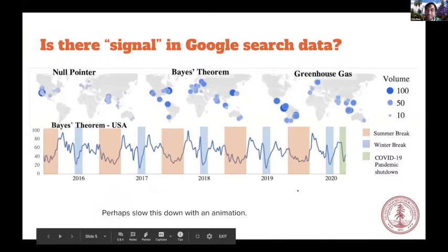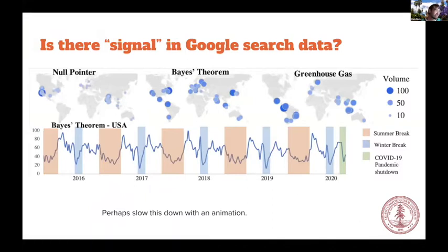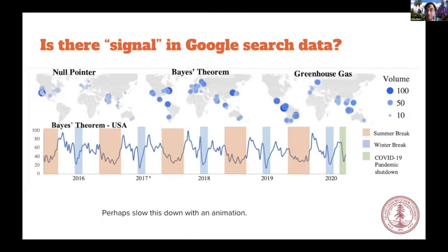Google has exposed to Serhat and I, and all of you, really interesting trends. If you go to Google and ask, can you tell me how much people are learning about Bayes' theorem, they can give you temporal trends and you can really start to see the education. You can see when people are not learning Bayes' theorem — it's during the summer break, the winter break, or the beginning of the COVID pandemic. It also tells you where people are searching for these concepts. Null pointers are searched a lot in the US and India, whereas greenhouse gas is searched a lot more close to the equator.